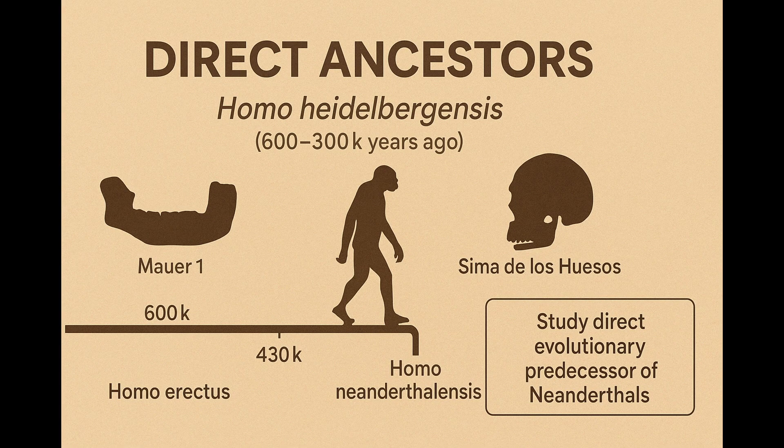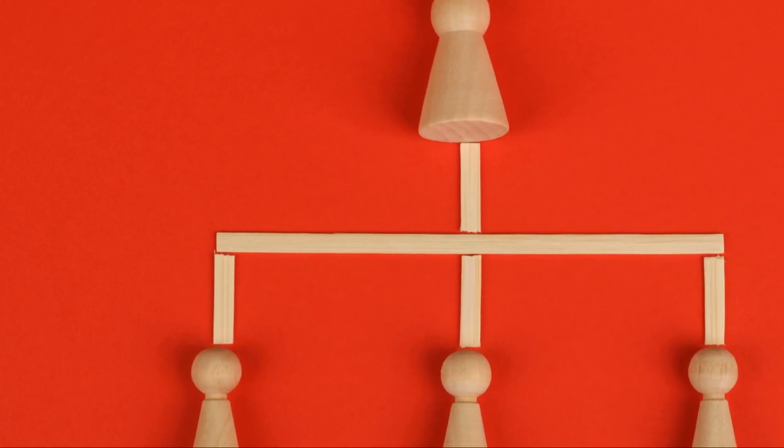Genetic studies also confirm that the Sima de los Huesos people are early representatives of the Neanderthals. Analysis of ancient DNA has shown their relationship to the Neanderthal-Denisovan clade. Based on all this, Homo heidelbergensis, especially its European populations, was the direct ancestor of the Neanderthal man. It is important to note that Homo heidelbergensis was previously considered the last common ancestor of the Neanderthals and modern humans, but research in recent years has nuanced this view.